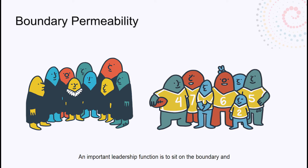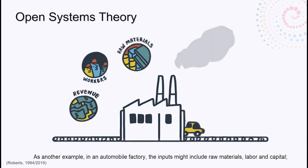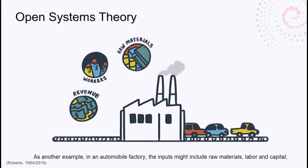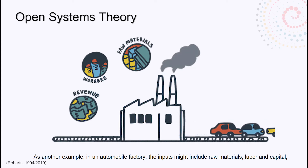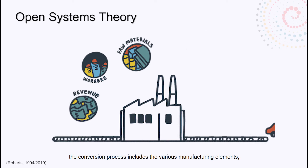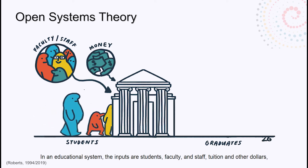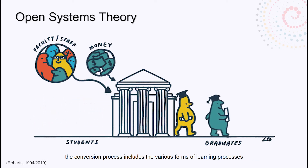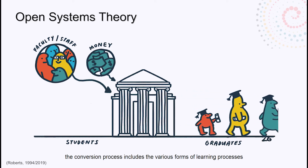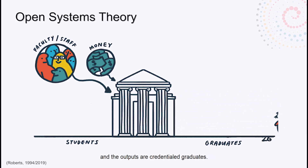An important leadership function is to sit on the boundary and regulate a group's transactions with the outside world. As another example, in an automobile factory, the inputs might include raw materials, labor, and capital, and the conversion process includes the various manufacturing elements — the outputs are the finished cars. In an educational system, the inputs are students, faculty, staff, tuition, and other dollars; the conversion process includes the various forms of learning; and the outputs are credentialed graduates.